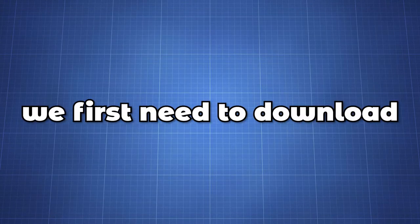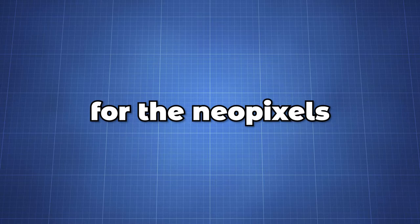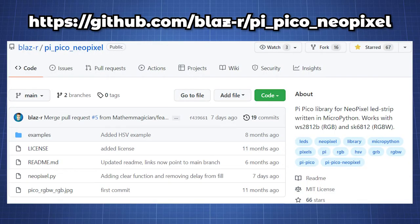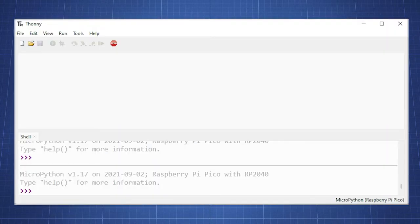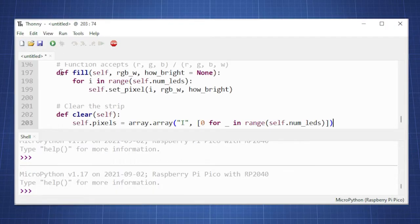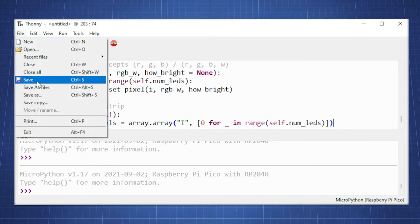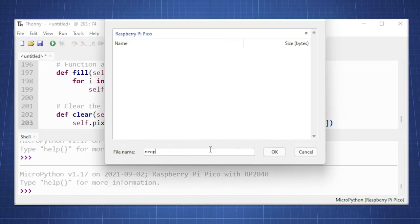Before we start the code we first need to download a library for the NeoPixels. Head over to the GitHub repository of the user blaze-r, open the neopixel.py and copy all the code. Now open Thonny, create a new file, paste the code and save it on the Pico as neopixel.py.